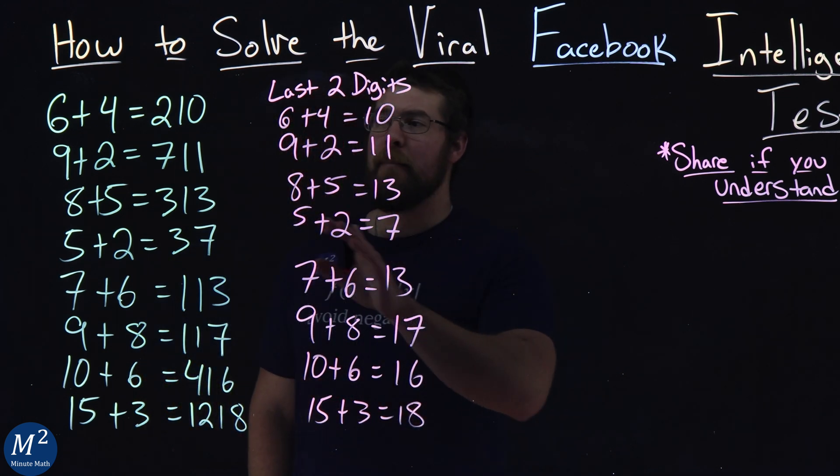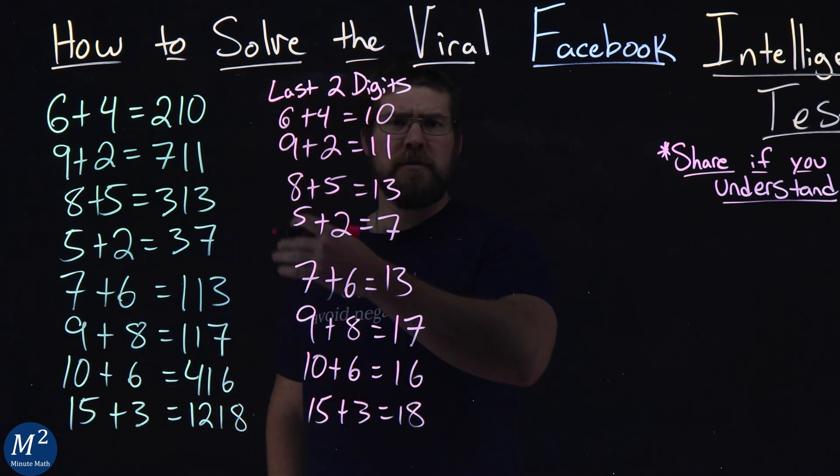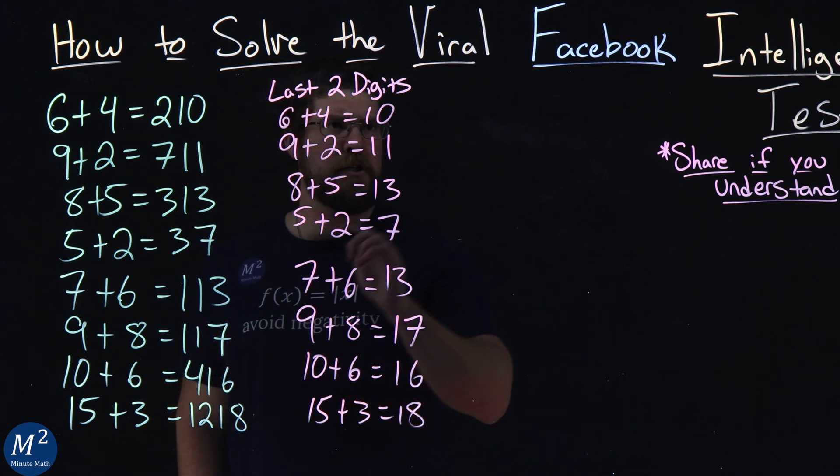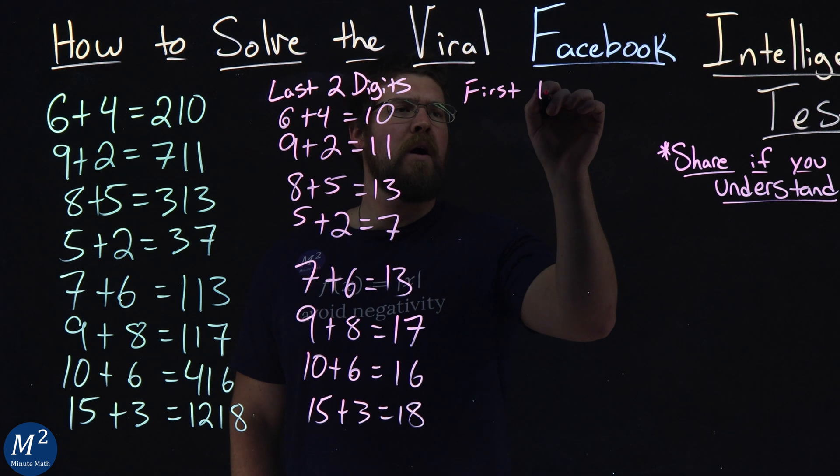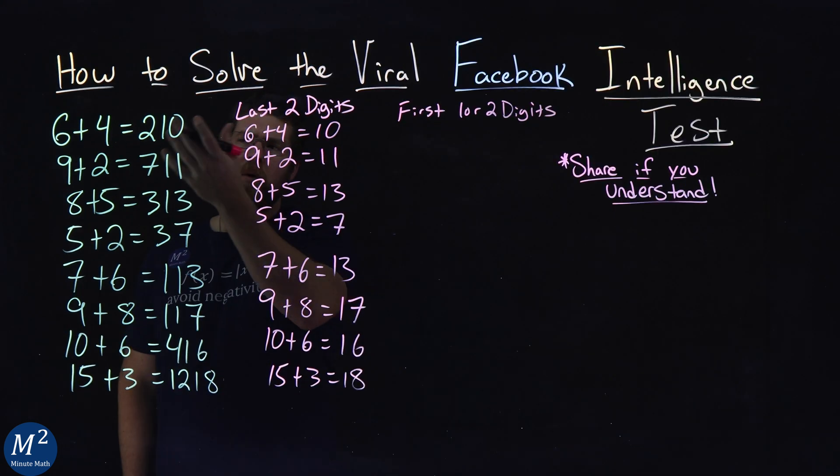So we kind of can see a pattern that happens with the last two digits. But what about the first one or two digits? Now notice sometimes we have a four-digit number here. So we'd have two digits or just one digit. So the first one or two digits, what's happening? What do we see?